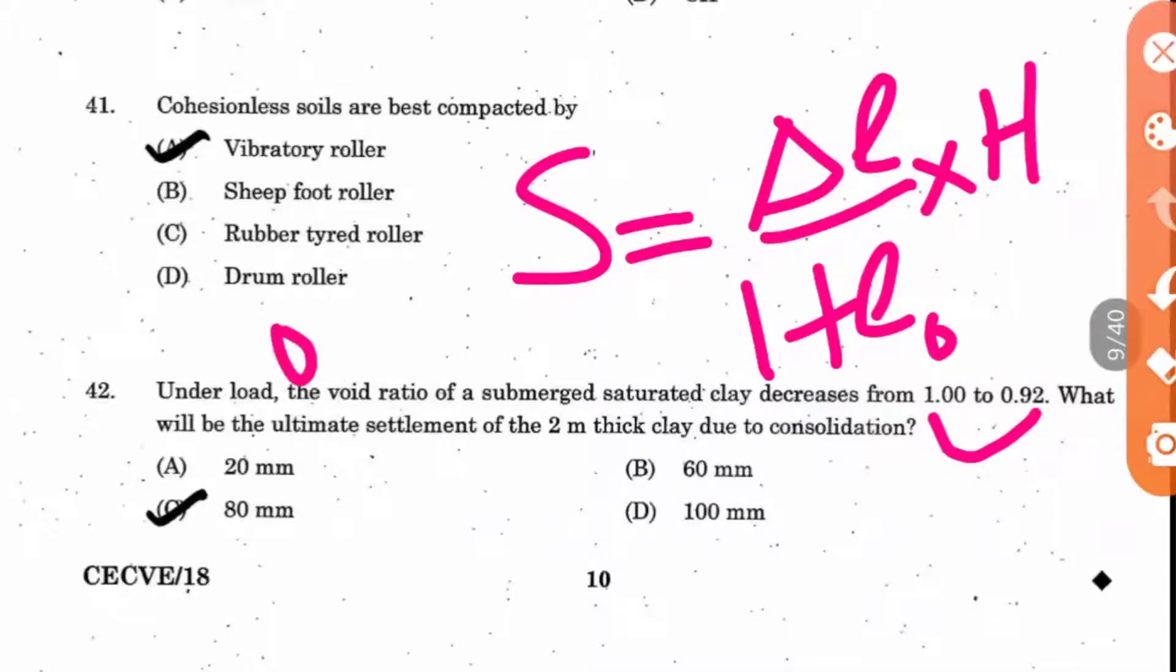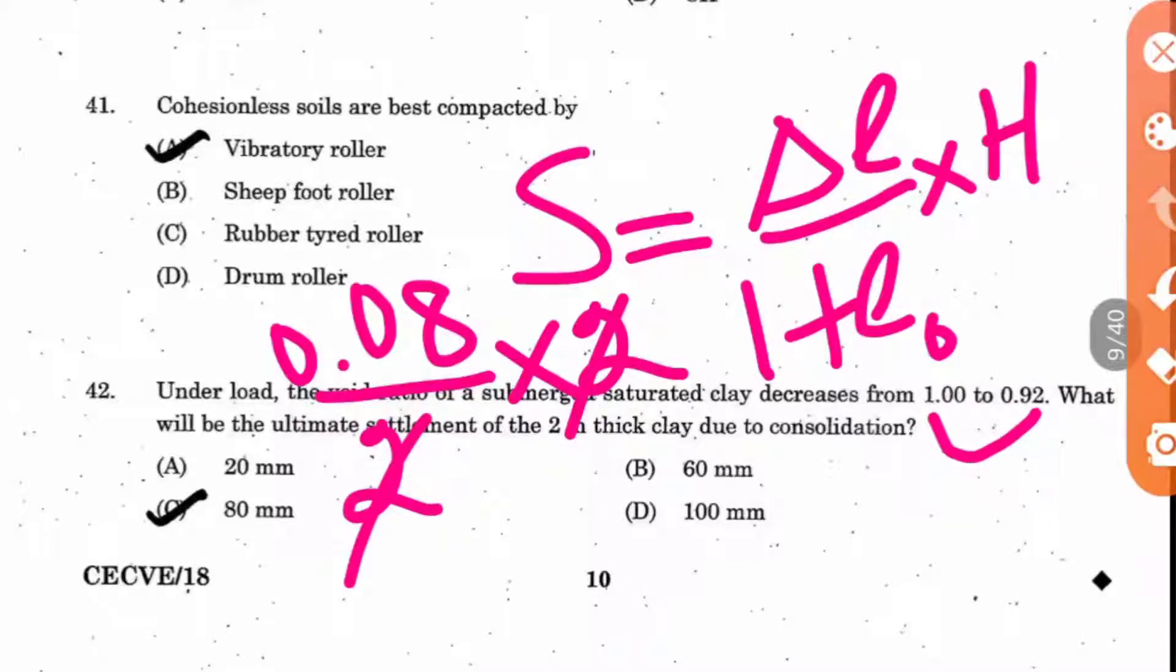How much it reduced from first to second value is 0.08. Divided by 1 plus E0, that is 1 plus 1, equals 2, into the depth thickness of the clay which is 2. So 2 and 2 cancel out, giving 0.08 meter as the answer. They have given it in mm, so 80 mm is the answer.